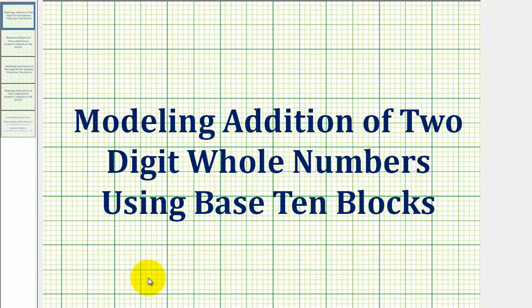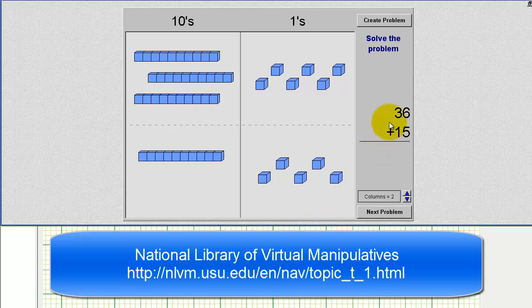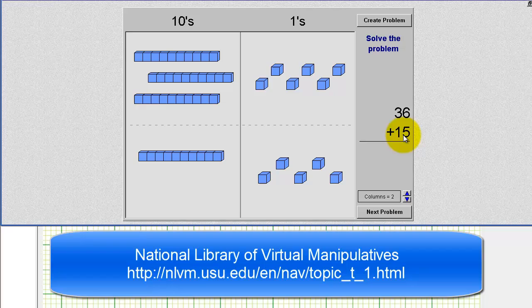Welcome to a lesson on modeling addition of two-digit whole numbers using base ten blocks. To begin, let's consider the sum of thirty-six and fifteen.